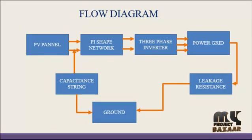We see about the flow diagram of our product. These blocks are used in our design. First one is PV panel. The PV panel is generated as per the equivalent circuit of the PV panel. After that, the PV panel is connected to the pi shape network, which consists of two inductors and one capacitor, all connected in a pi shape.